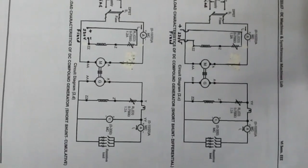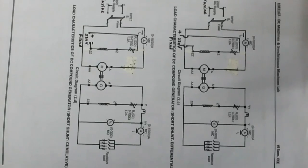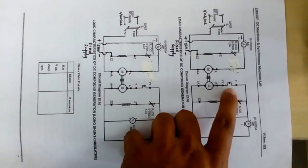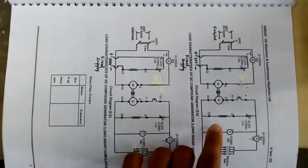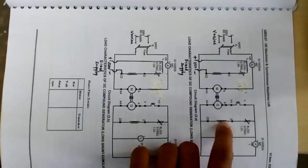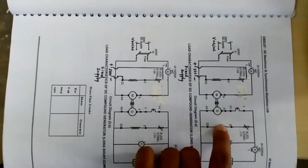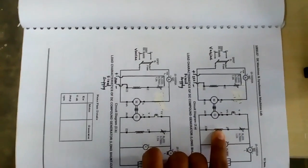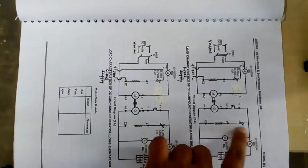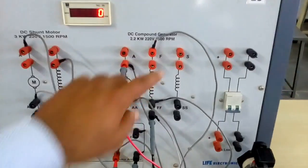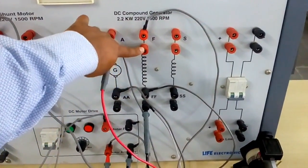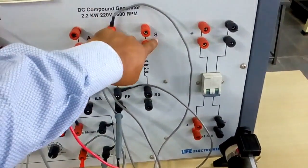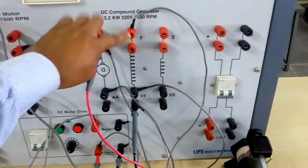Now for the DC compound generator — this is the circuit. In this circuit, the series winding and shunt winding are simultaneously used, hence it is called a compound generator. This is the long shunt configuration, where we use the shunt winding (F for field/shunt) and the series winding (S for series).